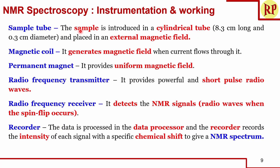The sample tube holds the sample, and the magnetic coil generates a magnetic field when current flows. The permanent magnet provides a uniform magnetic field. The radio frequency transmitter provides powerful, short-pulse radio waves. The radio frequency receiver detects the NMR signals when spin flip occurs, and the recorder records the intensity of each signal at a specific chemical shift to give the NMR spectrum.